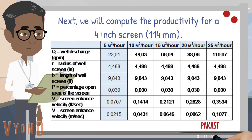Next, we will compute the productivity for a 4-inch screen. The designed inlet velocity is also less than the upper limit recommended by the standard for 4-inch casings, up to 25 cubic meters per hour. As we can see from the calculations, the usage of even one casing screen of 3 meters long provides the possibility of normal borehole operation with the yield of up to 25 cubic meters per hour.